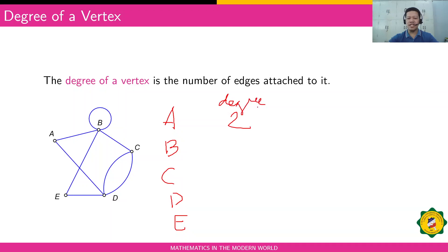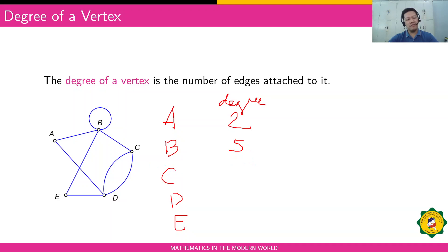For vertex C, we have one, two, three edges. Also, a loop contributes a degree of two. So including this loop, the degree becomes five for that vertex. For vertex C, there are three lines connected to it, so the degree is three.